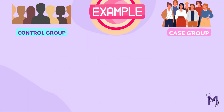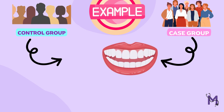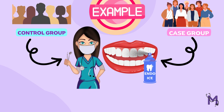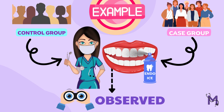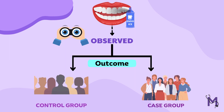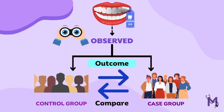For example, in our clinics, we must have performed tooth vitality tests. Endo ice is directly applied on the tooth in question and can be controlled by the clinician. The two groups are then observed and the outcomes of both the experiments in both the groups are compared.